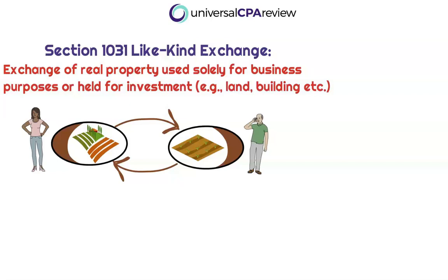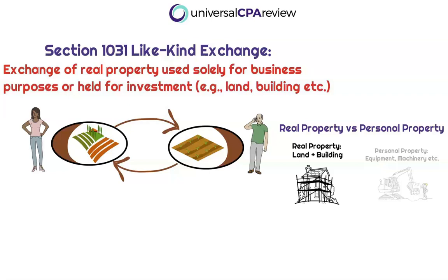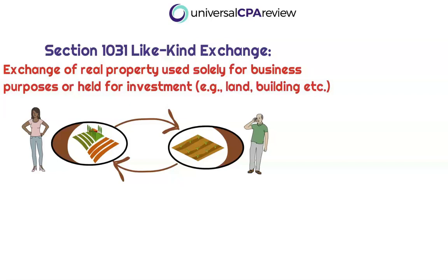This is a situation where two taxpayers are exchanging real property used for business or held as an investment. When I say real property, I'm specifically talking about real estate — it could be land exchanged for land, or land exchanged for a building. But per the TCJA, we are only including real property transactions as qualified like-kind exchange property. By definition, qualifying property is real property that is used in a trade or business or held for investment.